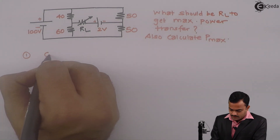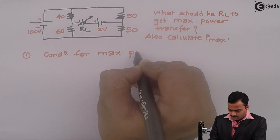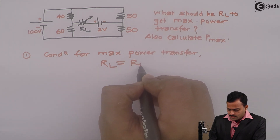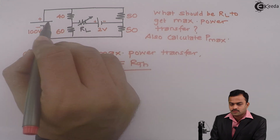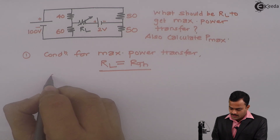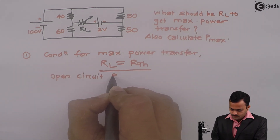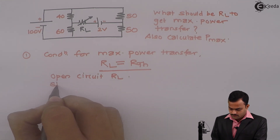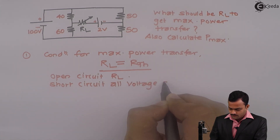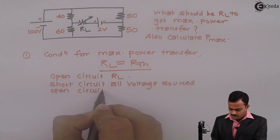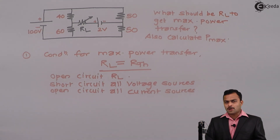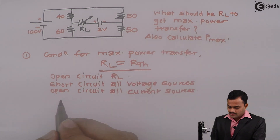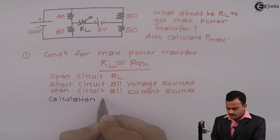We know the condition for maximum power transfer. The load resistance RL should be equal to RTH, whenever we see RTH from these two terminals. The procedure here is: we have to open-circuit RL, and we need to short-circuit all the voltage sources and open-circuit all the current sources. This is nothing but the procedure for calculation of RTH, and that is step number 1 — calculation of RTH.